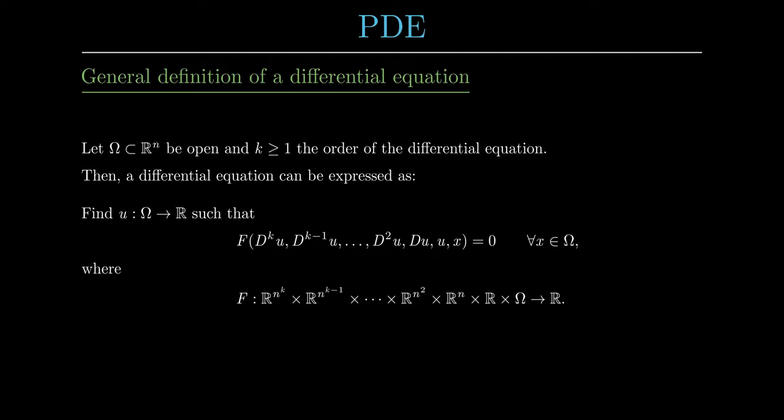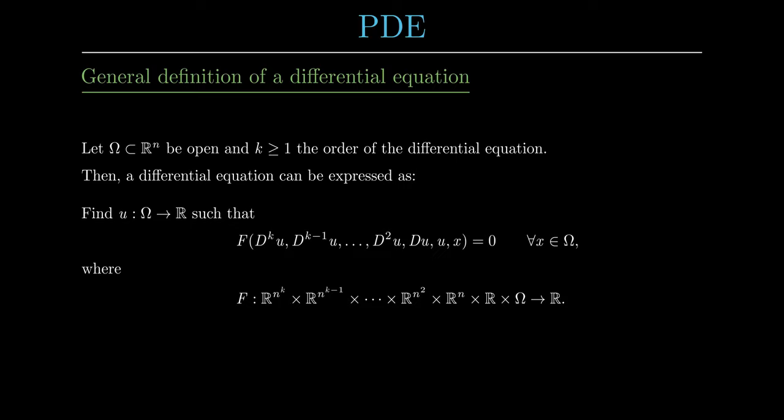This definition might seem too abstract at first, so let us look at some examples. The first example is the model problem for ordinary differential equations (ODEs). Here f is u prime minus Au, and the order of the differential equation k is 1 since the highest derivative is u prime. The next examples are three important PDEs.